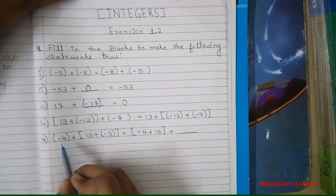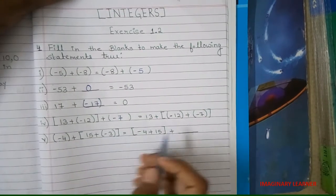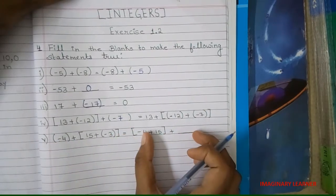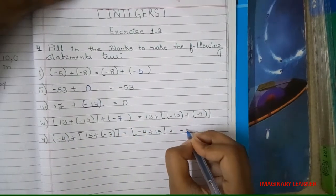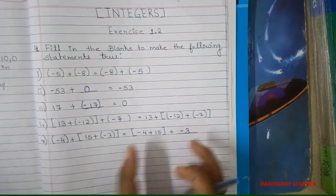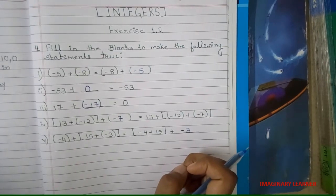Fifth: minus 4 plus 15 plus minus 3. Here we will add what value so that this side's value and that side's value are the same? So here we will add minus 3, so all values are the same. I hope students you understand this question.